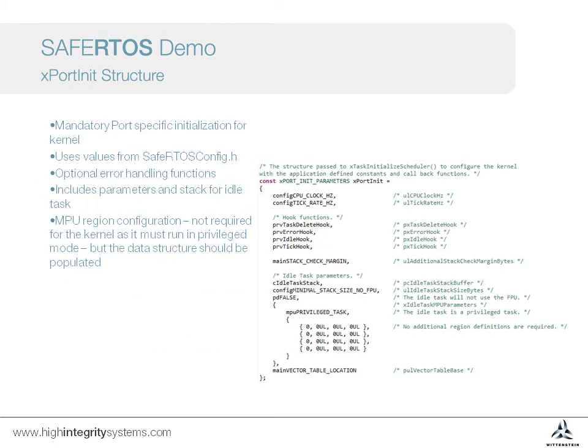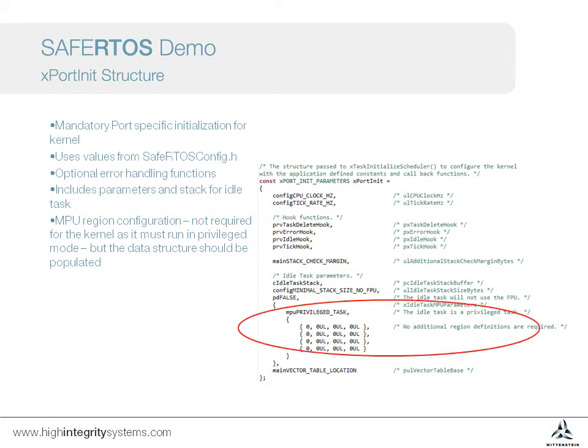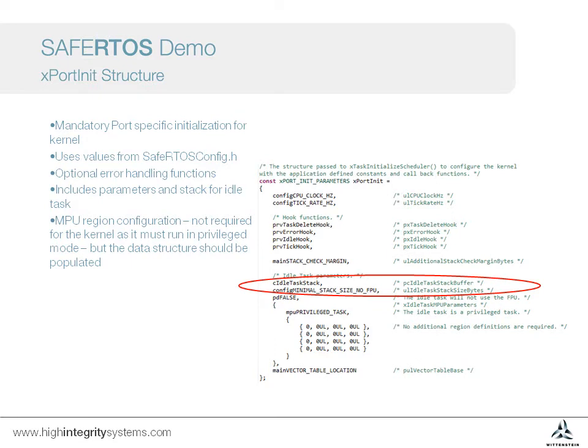The scheduler requires a set of parameters to operate. Some of these are common to all ports, such as the hook functions, while others are very device specific, such as MPU configuration. As SafeRTOS uses static memory allocation, the idle task that is created by the scheduler also requires a stack buffer to be passed in.